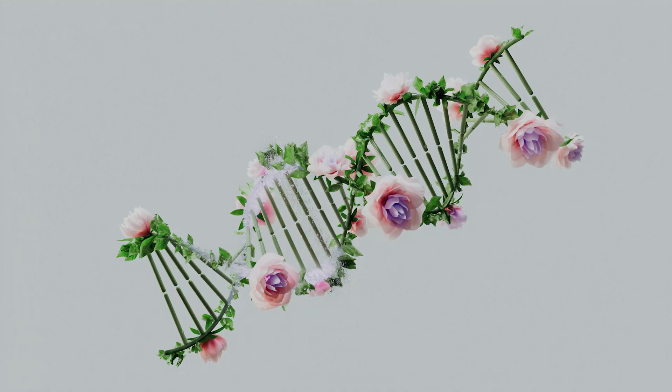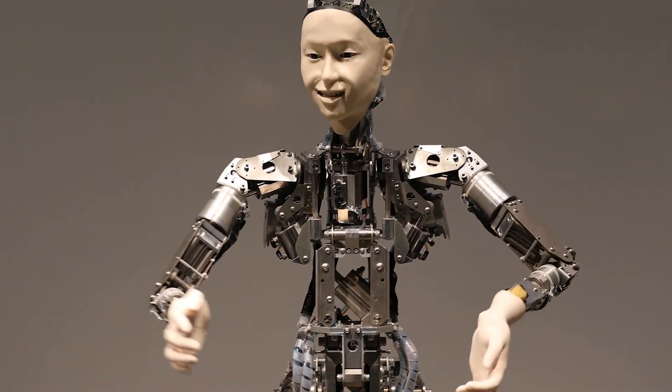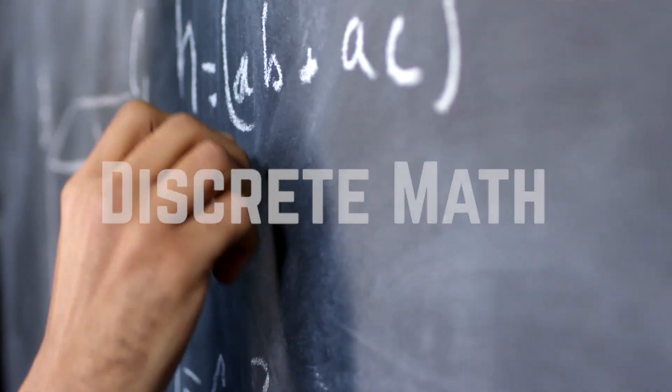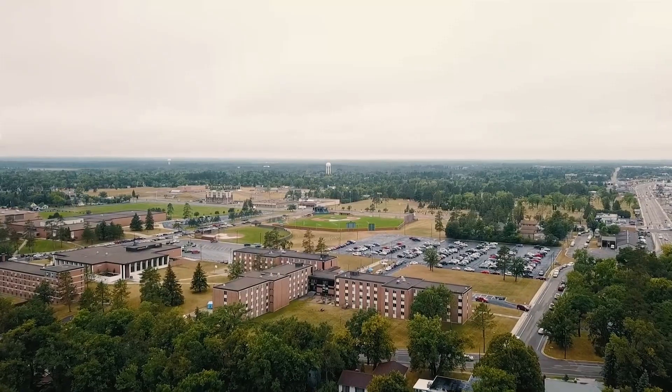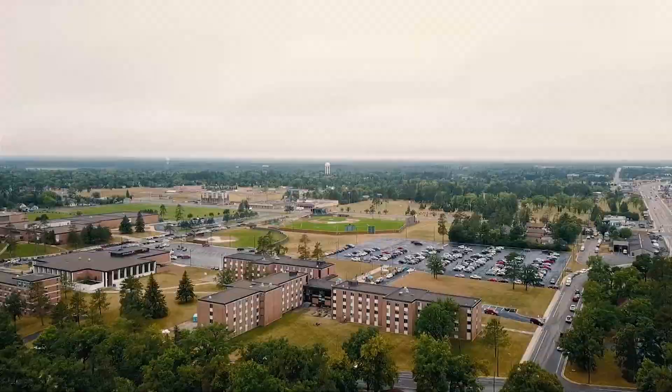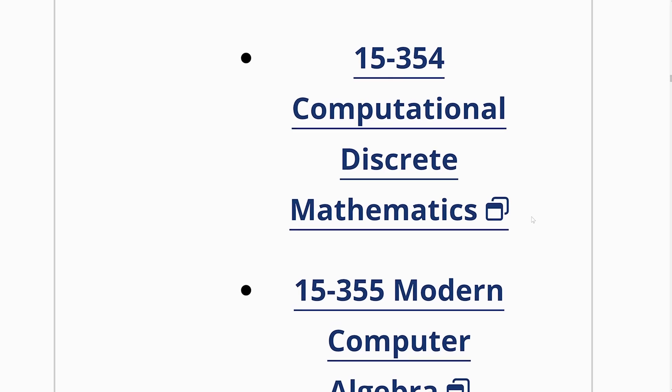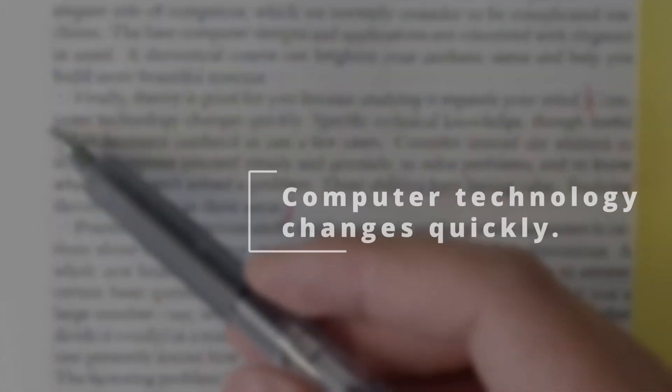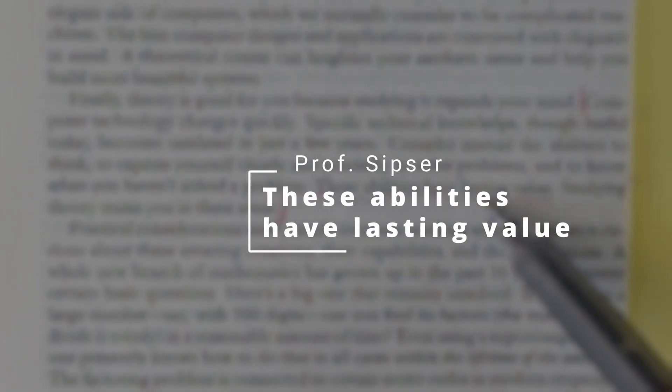OpenAI has unveiled Sora and DeepMind has released AlphaFold 4.3. Amid these rapid advancements, foundational courses like discrete math continue to hold a pivotal place at top-tier universities. CMU, MIT, and Stanford introduce discrete math in the freshman year. According to Professor Sipser, computer technology changes so fast, while the foundations of discrete math has lasting value.